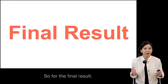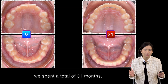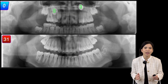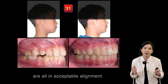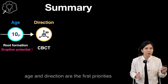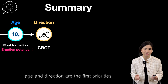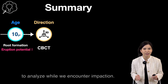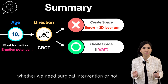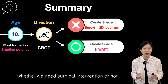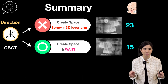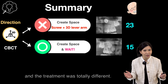For the final result, we spent a total of 31 months, and both impactions were corrected. The teeth are all in acceptable alignment. Therefore, age and direction are the first priorities to analyze when encountering impaction, because they determine whether surgical intervention is needed. In this case, we had two different situations with totally different treatments.